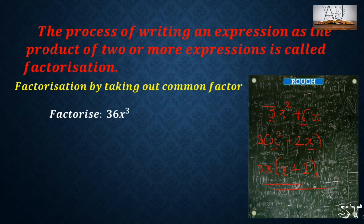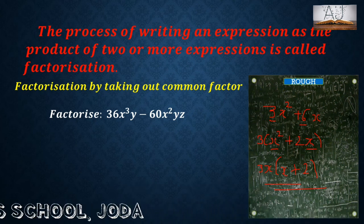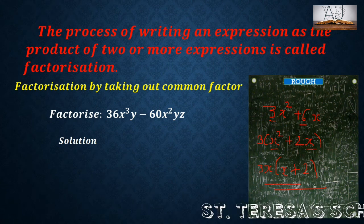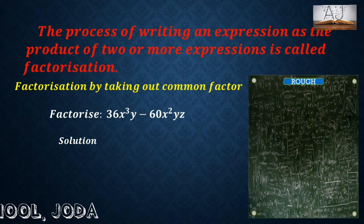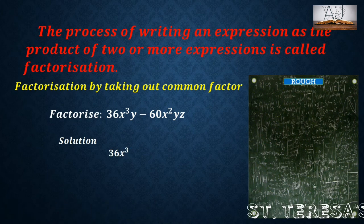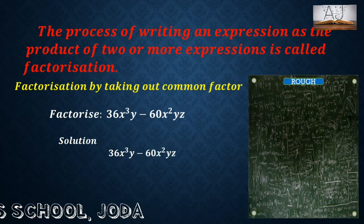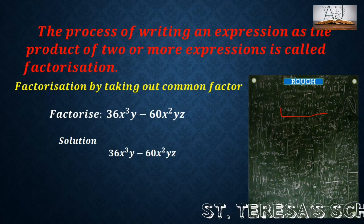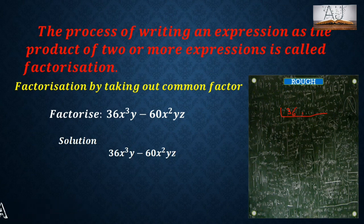Similarly let us factorize 36x cube y minus 60x square yz. Let us see how we can factorize it. First of all we need to find the HCF of 36 and 60, that is the highest common factor. So if you find the HCF of 36 and 60, first of all we can divide 36 and 60 by the prime number 2.